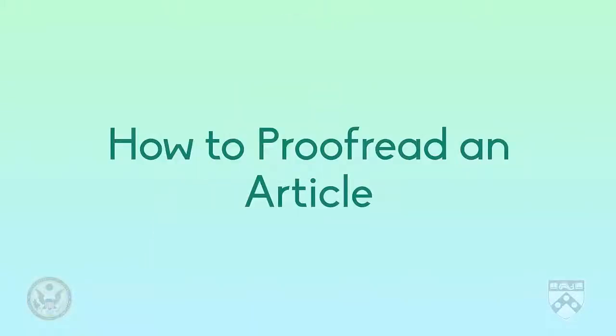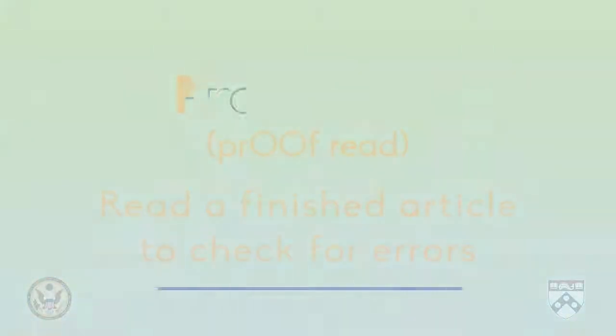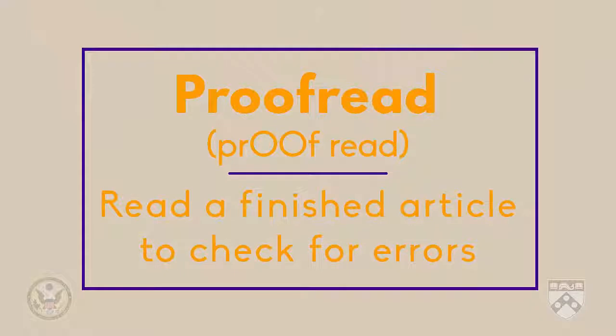Hello, in previous videos you looked at subject-verb agreement and writing accurately. In this video, we'll discuss how to proofread an article. Proofread means reading a finished article to check for errors. It's very important for a journalist to do this before they submit an article to the copy editor, who was introduced in video one, for publication.